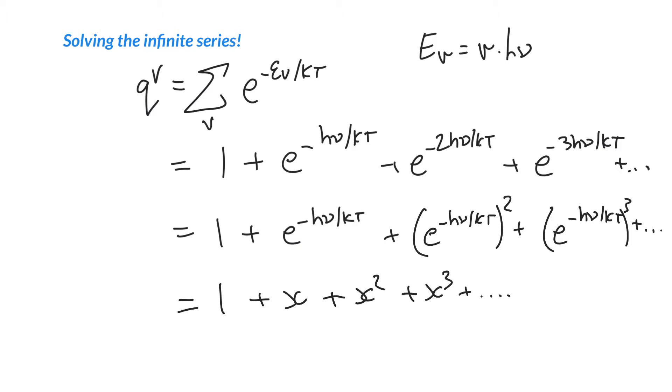So this is an infinite series. And if you've taken some calculus 2, you know that this infinite series is equal to 1 over 1 minus X. And so that allows us to write q^v is 1 over 1 minus X. Well, what was X? X was e to the minus h nu over kT. Pretty clever.